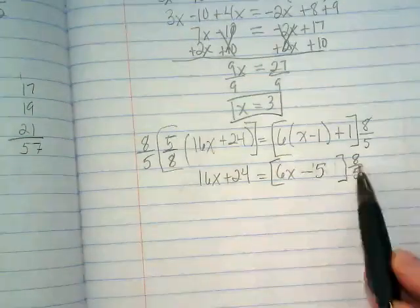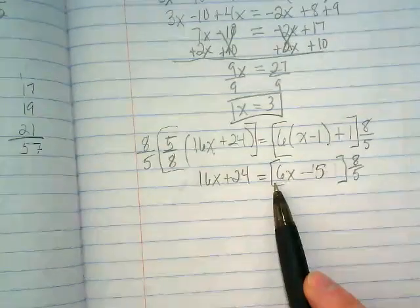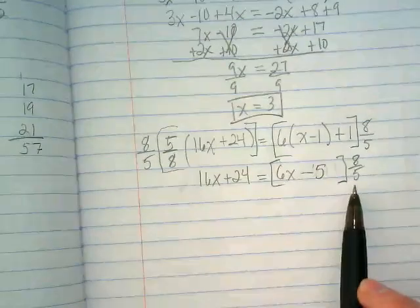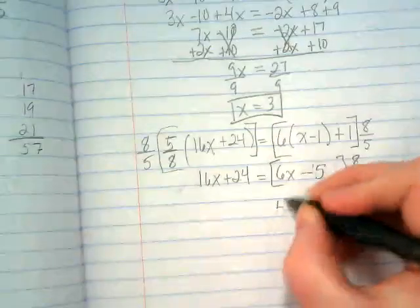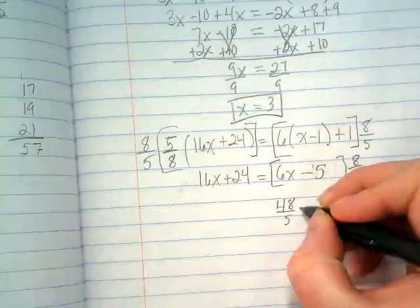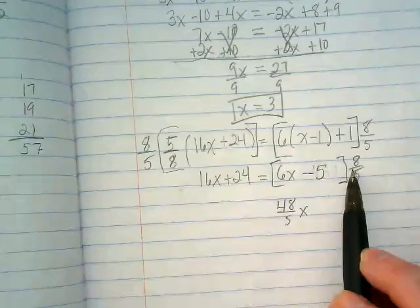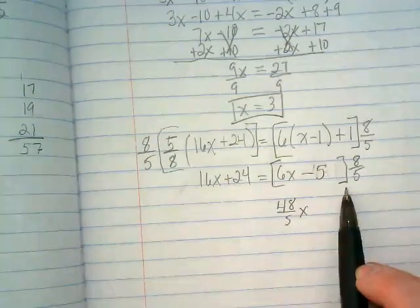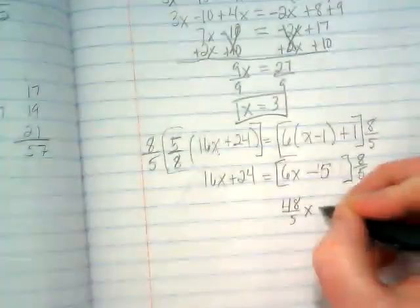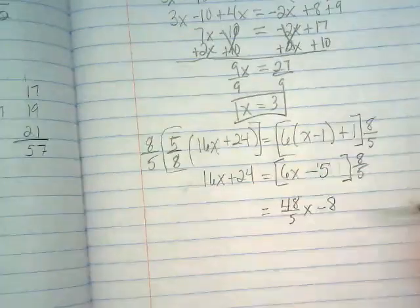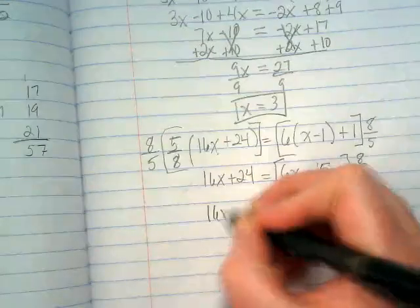So now I'm going to think, what is 8 times 6? 48 divided by 5. So this is 48 over 5x. And negative 5 times 8 divided by 5. It's going to give us negative 8. Equals 16x plus 24.